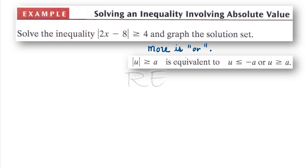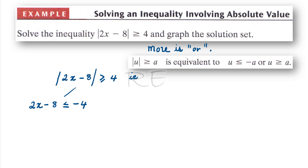The absolute value of 2x minus 8 is greater than or equal to 4. The two cases are: either 2x minus 8 is less than or equal to negative 4, or 2x minus 8 is greater than or equal to 4.